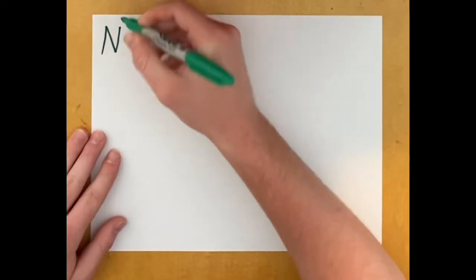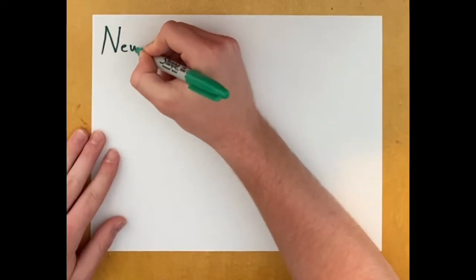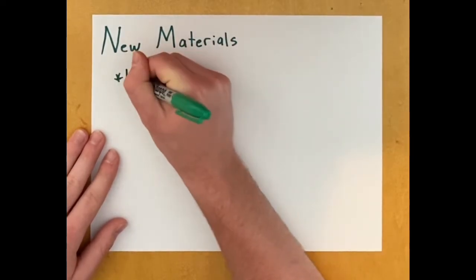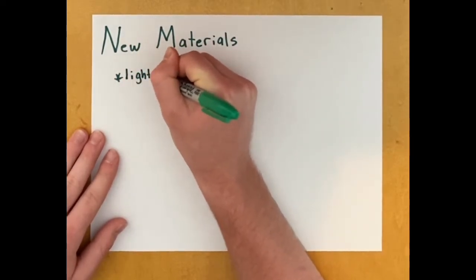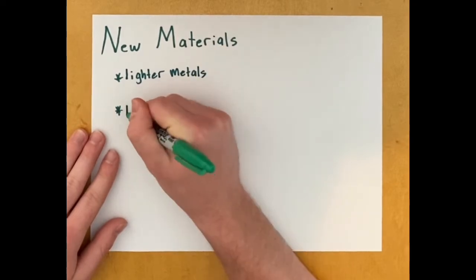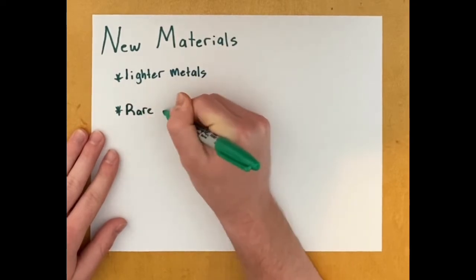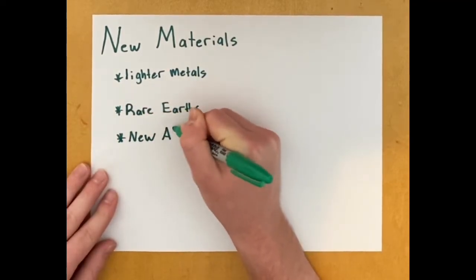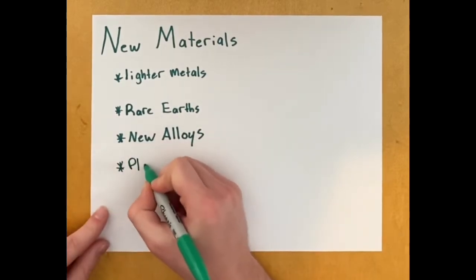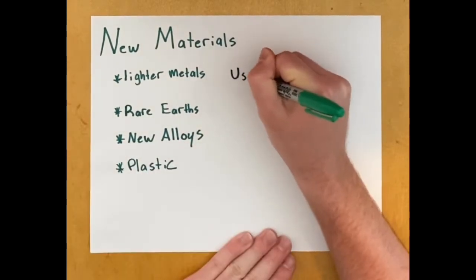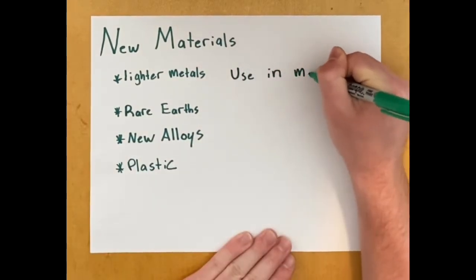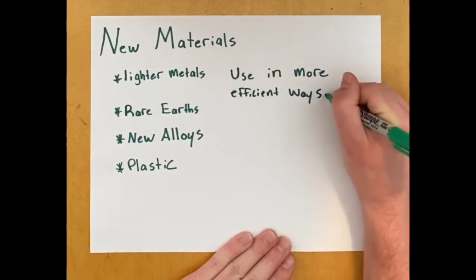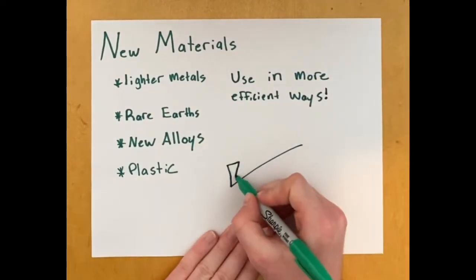Throughout the second part of the industrial revolution, new materials came about. We were able to use lighter metals for things, and we also discovered substances and materials such as rare earths. New alloys were discovered that made for better building. Also during this time period, plastic came about and we were able to use it in very efficient ways.